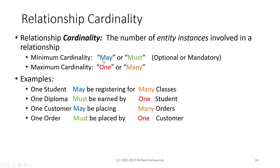The minimum cardinality emphasizes may or must — is it optional or mandatory? For example, 'one student may be registering' is a minimum cardinality of zero — that's the may. We could have a student who's been accepted to the university but hasn't yet registered. 'One diploma must be earned by' — if a diploma exists, it must have been earned by a student, so the minimum cardinality is must.